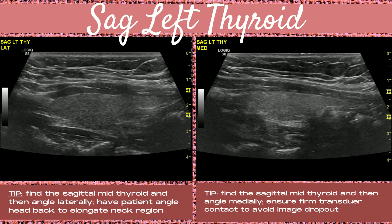Next, image the sagittal left thyroid lateral and medial sections. Find the sagittal mid-thyroid and then angle laterally, having the patient angle their head back to elongate the neck region — this ensures good transducer contact and avoids image dropout along the sides. Then find the sagittal mid-thyroid again, angle medially, and ensure firm transducer contact to avoid image dropout on the sides of the image.